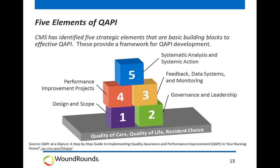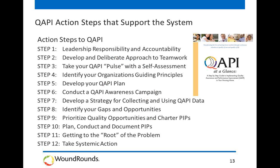There are five basic building blocks to the QAPI program: design and scope, developing your governance and leadership, getting feedback and data and monitoring, putting in place your performance improvement plans or projects, and providing systematic analysis and systematic action. If you focus on these five blocks, you are going to build a strong and effective program. Next, Michelle is going to share a practical step-by-step approach on how she and her organization have implemented an effective QAPI program following the steps outlined by CMS.